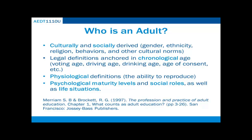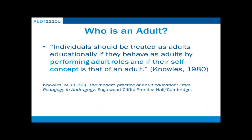There are also physiological definitions of adulthood, which typically focus on the ability to reproduce, which varies from era to era, culture to culture, and individual to individual. Psychological maturity levels and social roles, as well as life situations, are also used to define adulthood. Knowles suggests that individuals should be treated as adults educationally if they behave as adults by performing adult roles, and if their self-concept is that of an adult. In summary, many complex factors must be taken into account when defining and describing who is an adult.